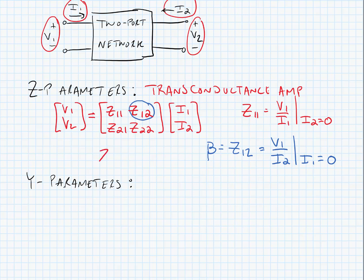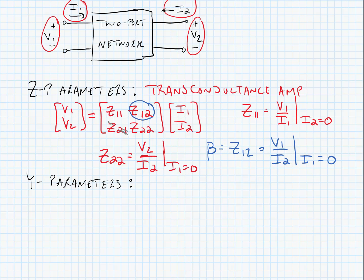Another example: if we were looking for Z22, it would be equal to V2 over I2 when I1 is equal to 0. For these networks, we're almost always going to be able to ignore the 2,1 parameter — so in this case, we'll be able to ignore Z21.